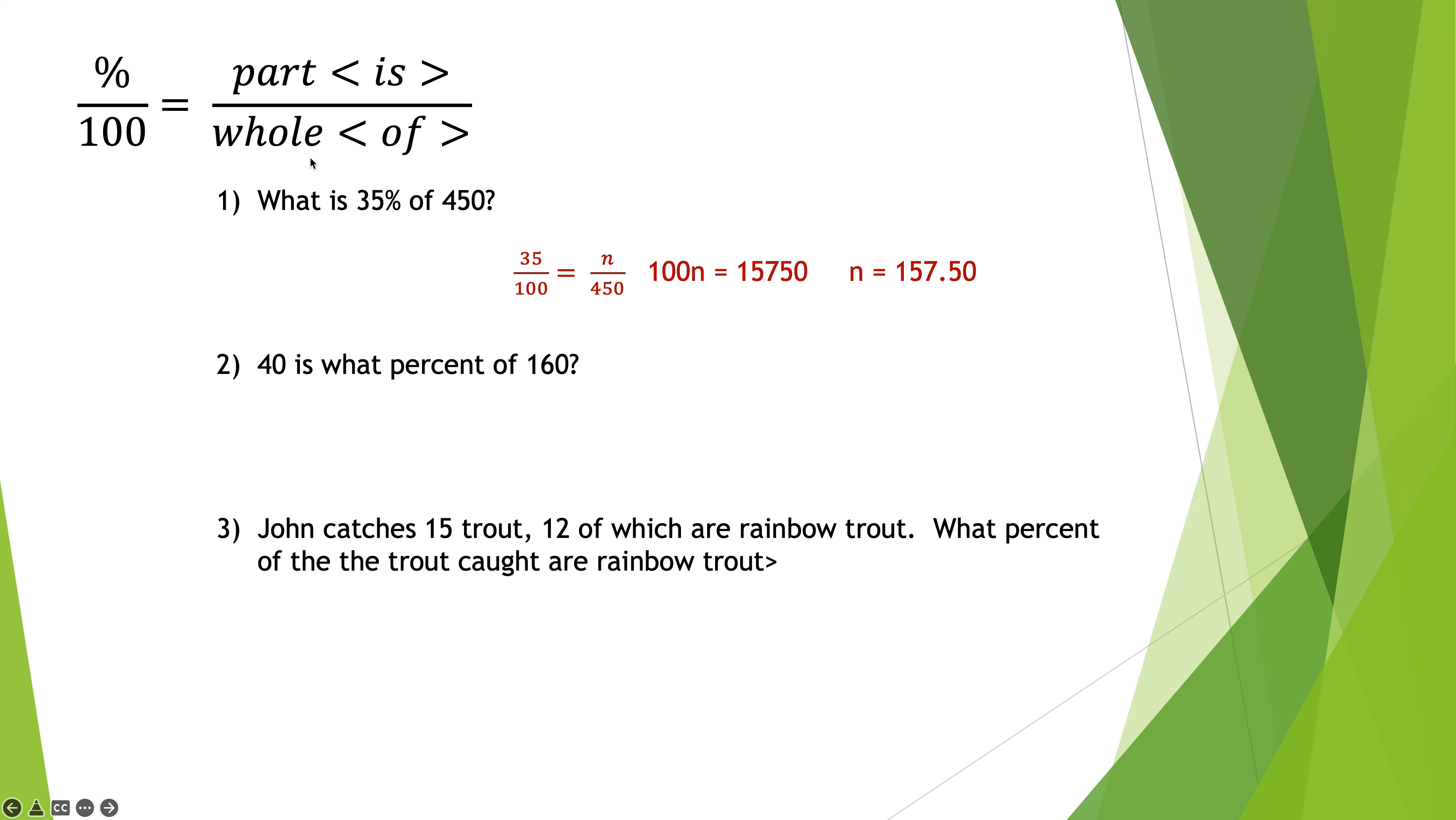When I read what is 35% of 450, I have to fill in the places in this proportion. This is like a template to work. In the percent place, we'll go whatever I have as the percent here. 35 is linked up to percent, so I put 35 in the percent place. I look for the word is, and next to the word is, is what. So that's the thing I'm looking for. So I put N in the what place. And the whole is what it's out of, and it's out of 450. So 450 is the whole. Once I fill these things in, we can cross multiply. 100 times N is 100N. 35 times 450 is 15,750. Divide both sides by 100, and I get N is 157.50. Let's have you do 40 is what percent of 160. You're going to take the template, fill things in, cross multiply, get your answer.